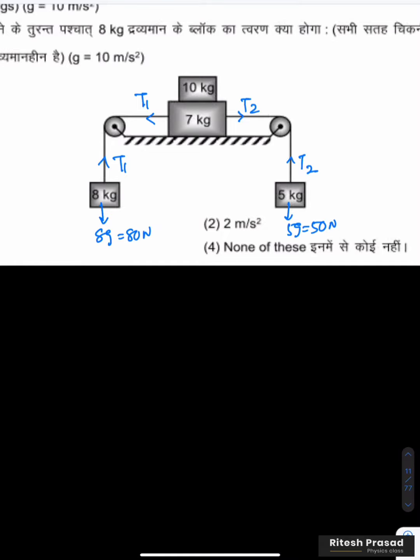So now we have three attached, so this means that three acceleration will be the same. So 8 kg moves downward with acceleration a, 7 kg left side moves with acceleration a, 5 kg upward moves with acceleration a.